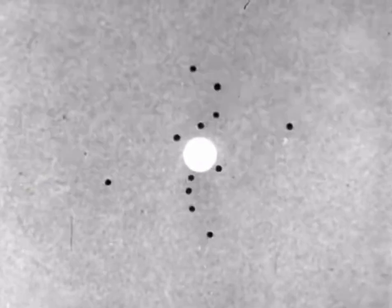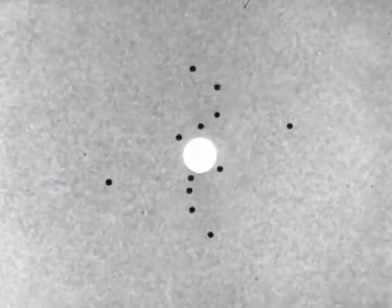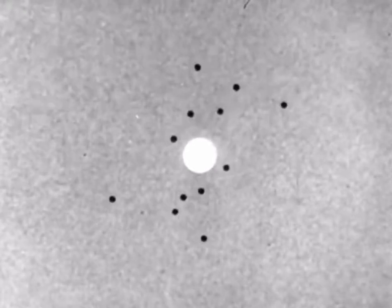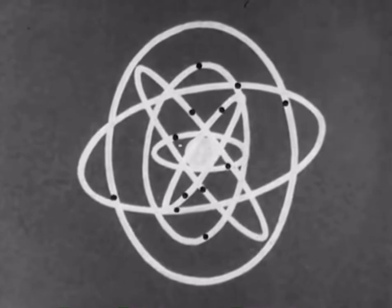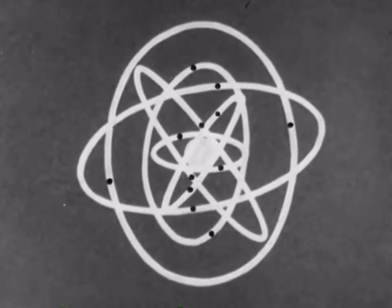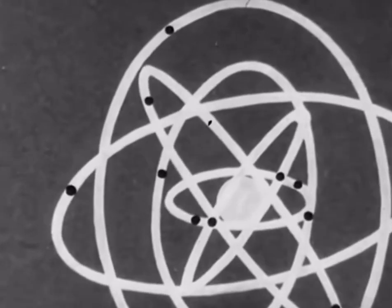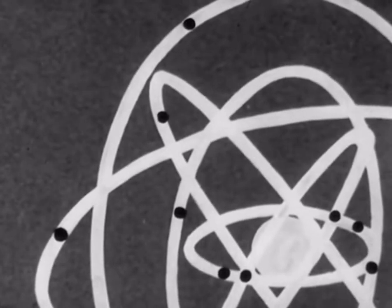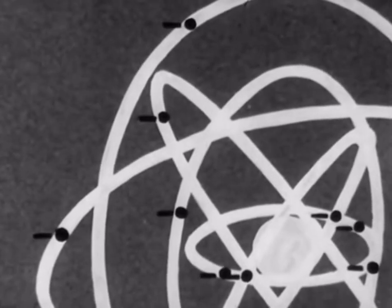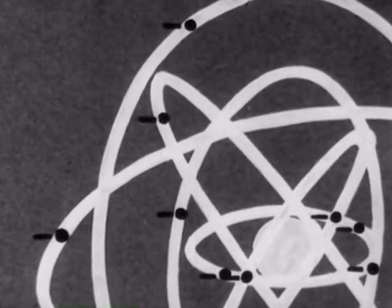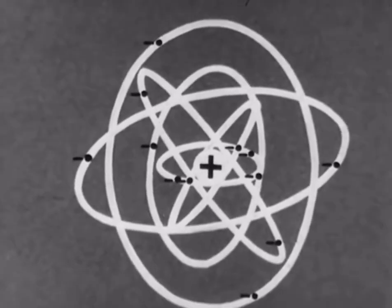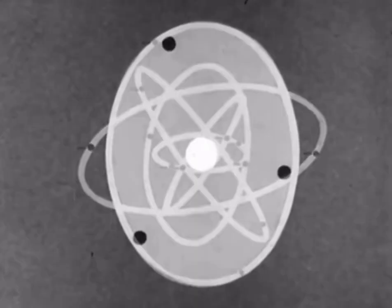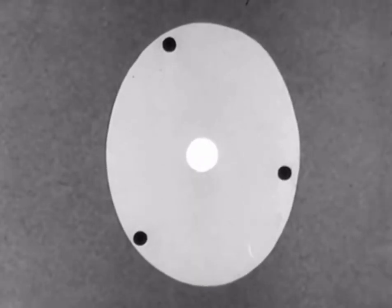Every atom consists of a central core, or nucleus, around which revolve a number of smaller particles called electrons. These electrons travel in orbits of different radii. Each electron carries a negative charge of electricity, and the nucleus, a positive charge.